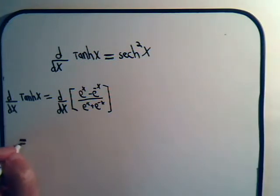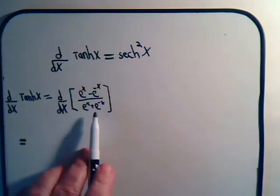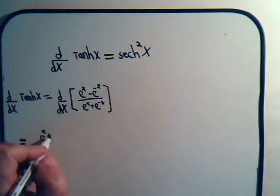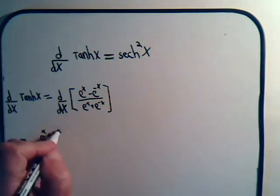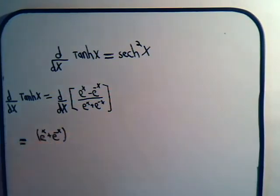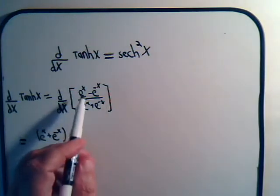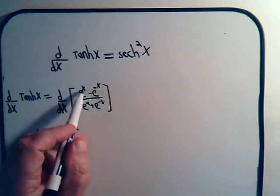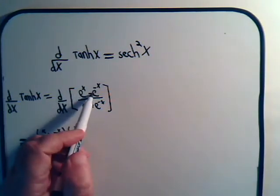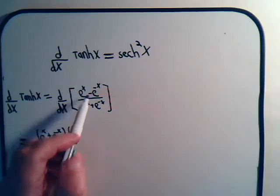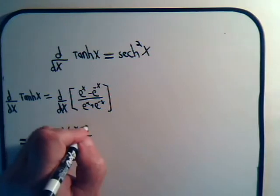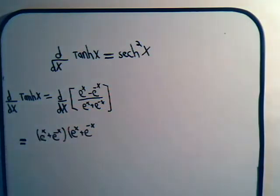We've written it down here where we have lots of room. So we're going to have e to the x plus e to the minus x, and that's going to be multiplied by the derivative of the numerator. That derivative gives us e to the x, and then minus e to the minus x — but there's already a minus sign there, so that makes it plus e to the minus x.